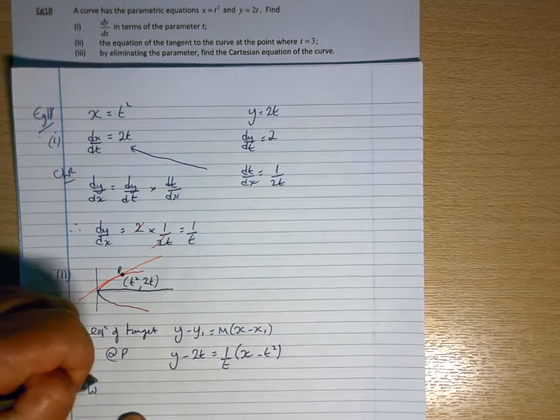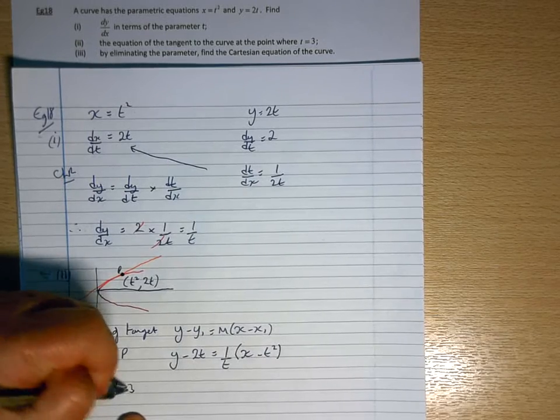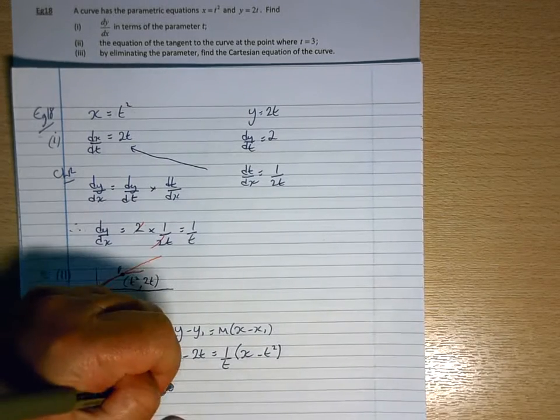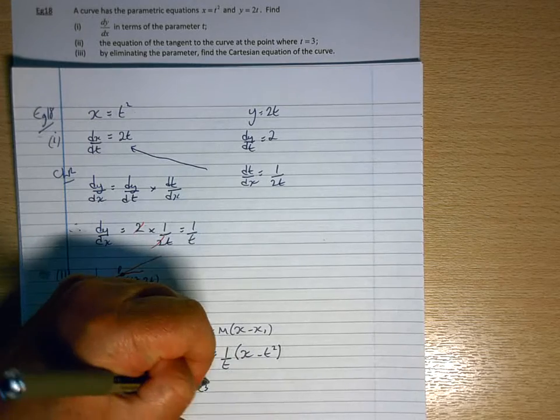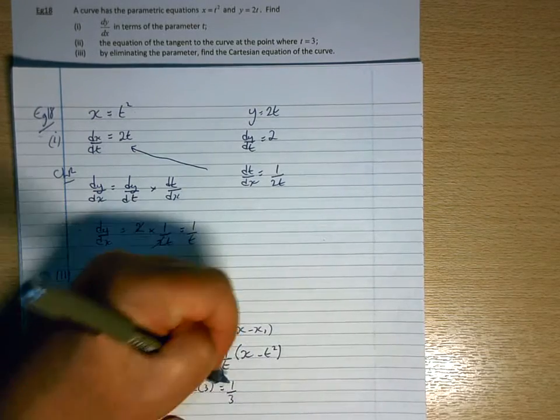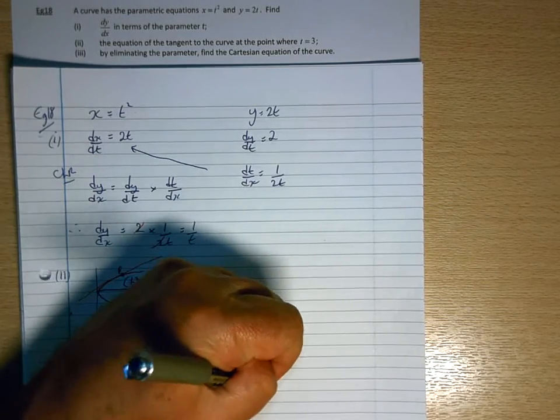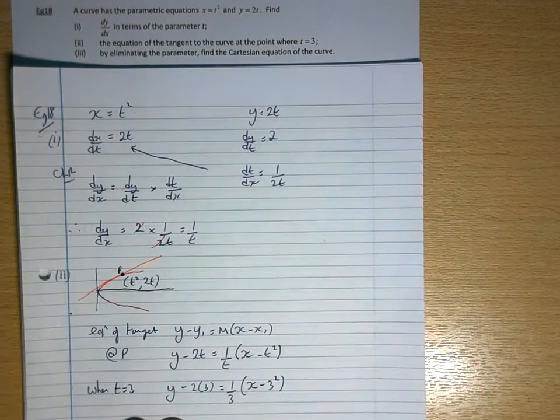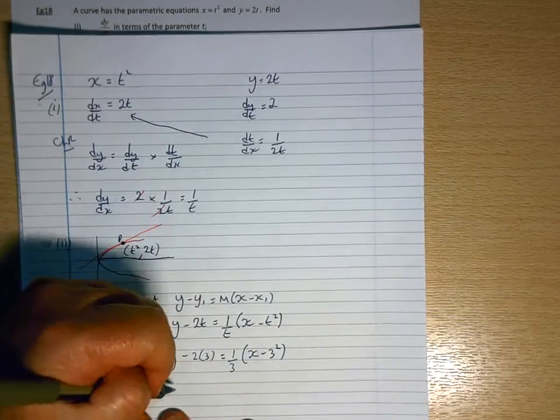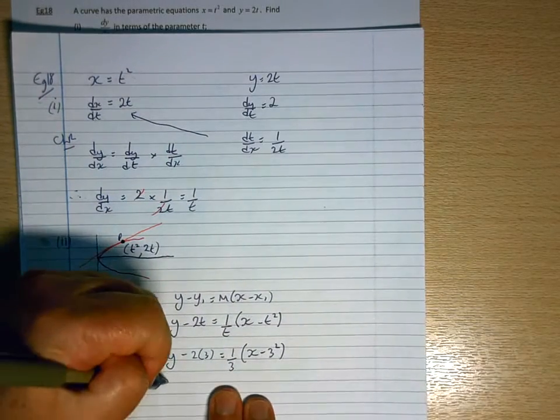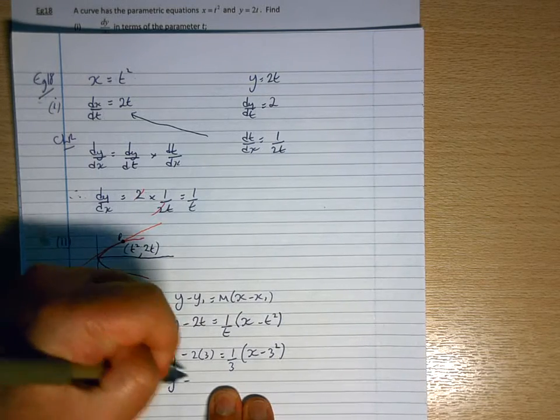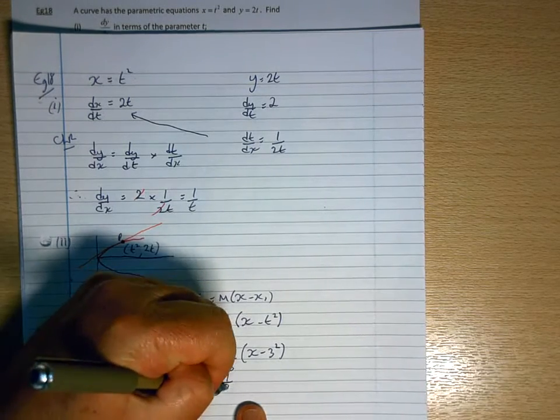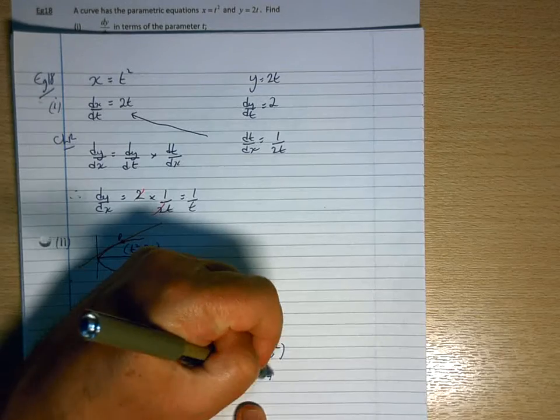So when t equals 3, it'll be y minus 2 lots of 3 equals 1 over 3 times x minus 3 squared. So y minus 6 equals 1 third x minus 9.